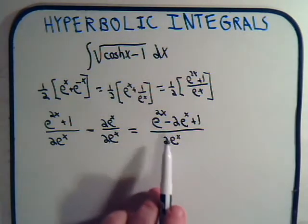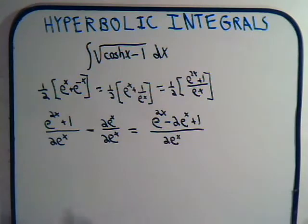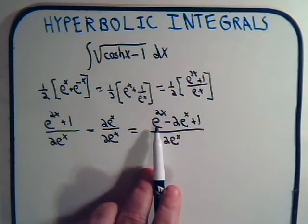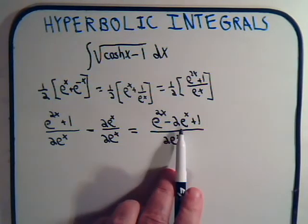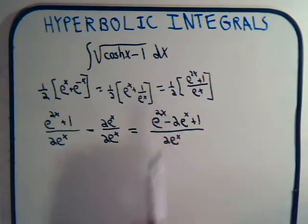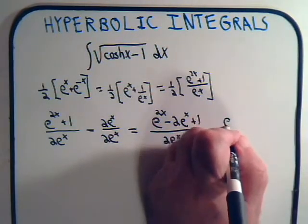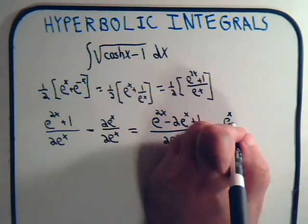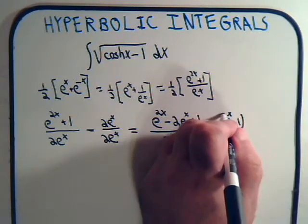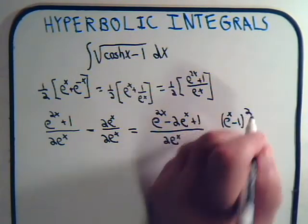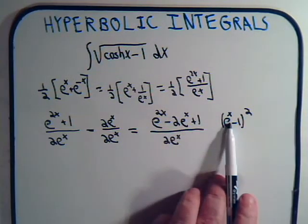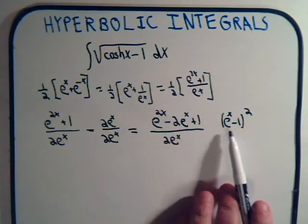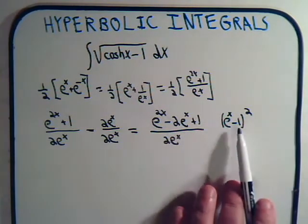That is the quantity inside the square root sign. The numerator is e to the x squared minus 2e to the x plus 1, which can be written as e to the x minus 1, all squared. This gives e to the 2x minus 2 times e to the x plus 1.